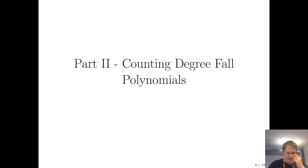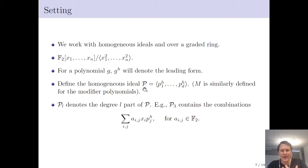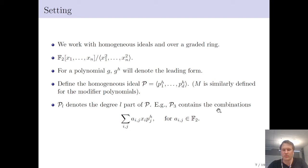Now we go into estimating how many degree-fall polynomials there will be — first estimating at which degree they appear, known as the first fall degree, but also the total number we expect to find. Since we only care about degree-fall polynomials, we work with homogeneous ideals and graded rings. We kill off all squares, and for any polynomial we consider only the leading form — the highest degree part. We define the ideal of the public key (the quadratic parts of all public polynomials) and the modifier ideal, which includes the quadratic parts of IP and Q+ combinations. P_l will denote the degree-l part of the ideals.